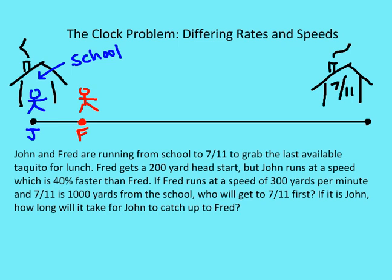John is in blue and Fred is in red, and both John and Fred are running from school to 7-Eleven. They've discovered that there's one more taquito for lunch and they both want it. Fred learns before John, so he's able to get a 200-yard head start, which is good for Fred because he's a little bit slower. John runs at a speed which is 40% faster than Fred. If Fred runs at 300 yards per minute and 7-Eleven is 1,000 yards from the school, who's going to get to 7-Eleven to get that taquito first?